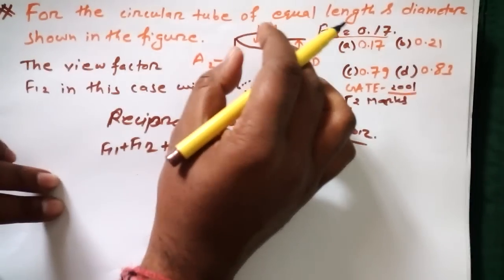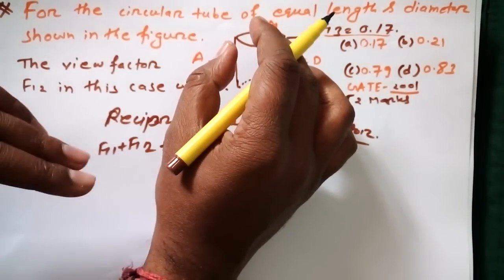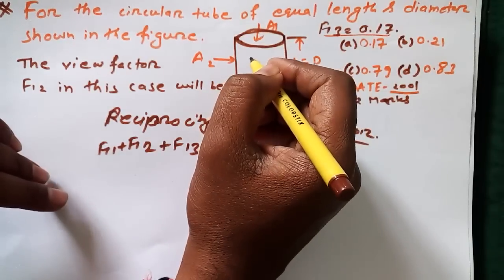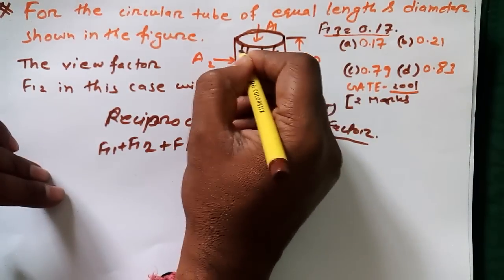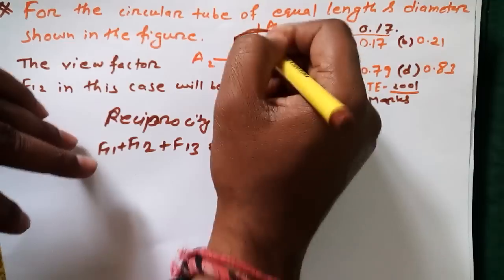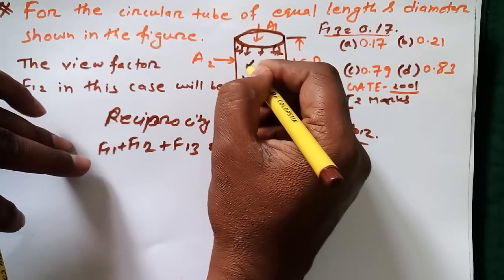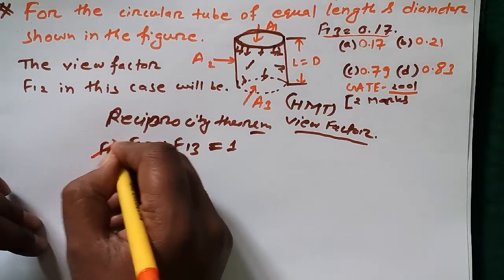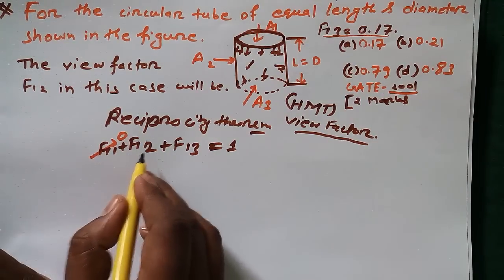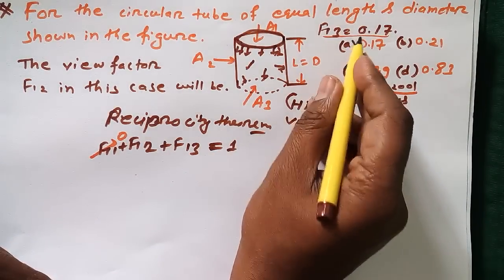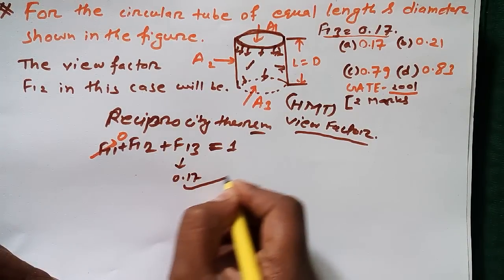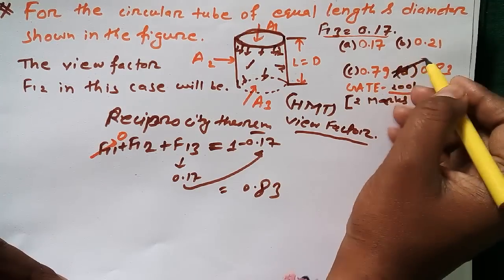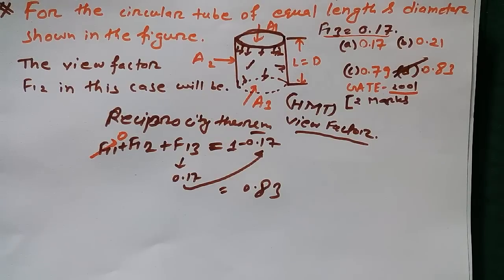From surface 1, radiation will not come back to itself — it will not go back to the same surface. So F11 = 0. We are left with only two terms: F12 and F13. Since F13 = 0.17, we get F12 = 1 − 0.17 = 0.83. The correct answer for this question is option D.